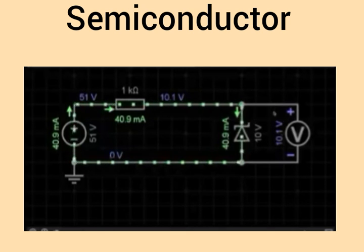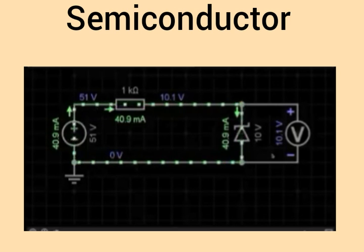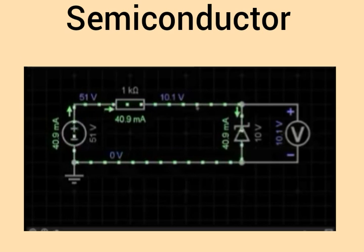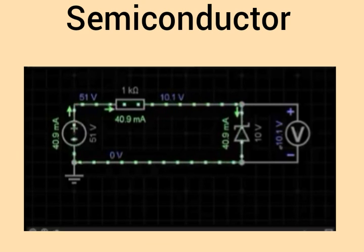Let us have a look at what happens when I increase the voltage of the power supply. So I have increased the voltage of this power supply to 51 volts, but look at the voltage across the Zener diode. It is still approximately 10 volts. So how exactly has this just happened?